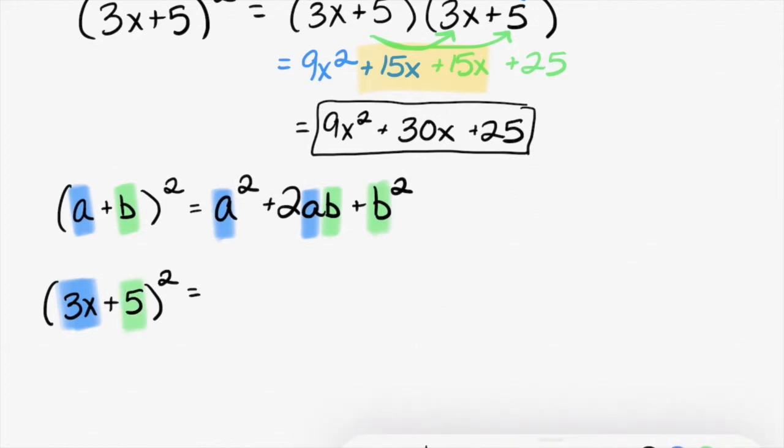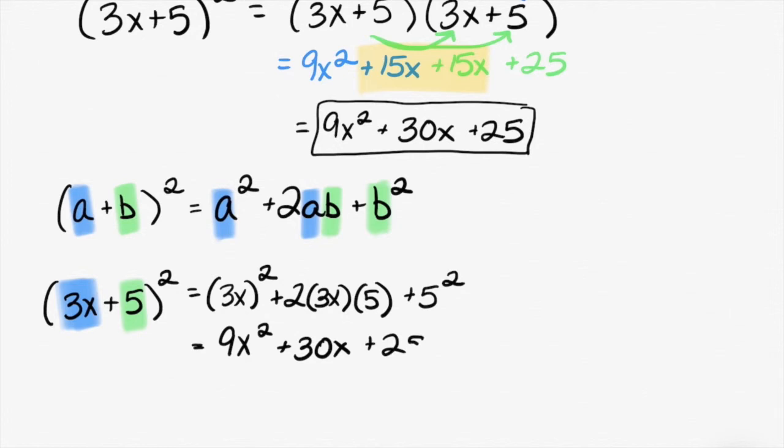I start off with a squared, which is going to be 3x squared. Plus, and then I have 2 times a times b. So, 2 times a times b plus b squared. So, that's 9x squared. 2 times 3 times 5 is 30. So, 30x plus 25. And what do you know? It's the same answer.